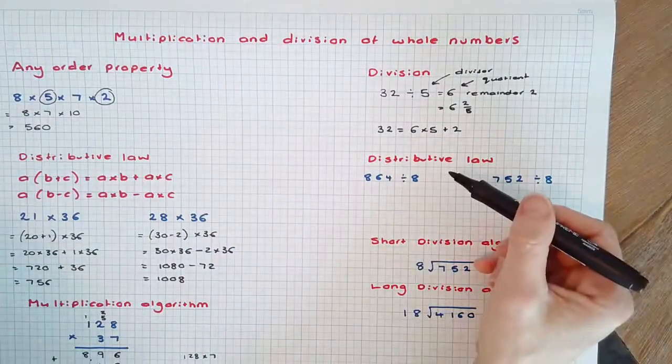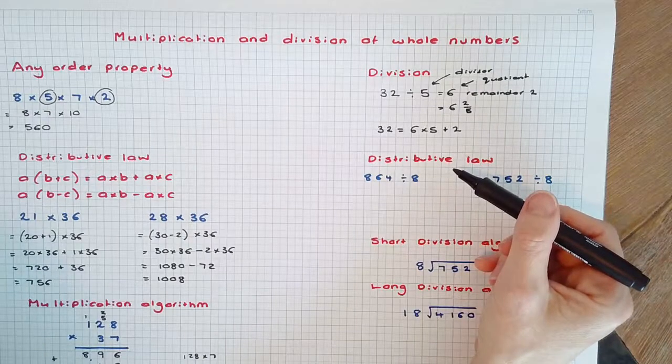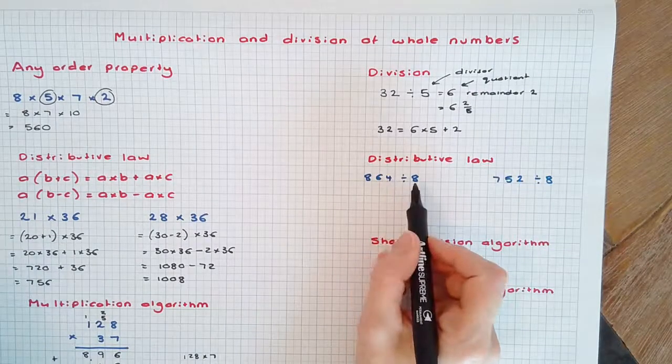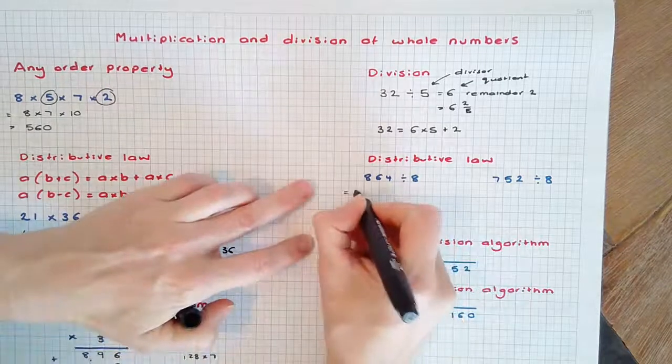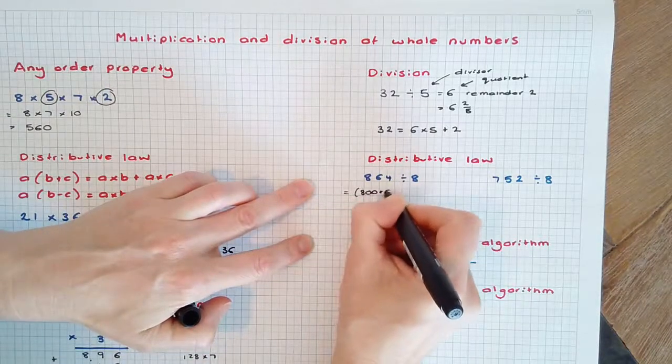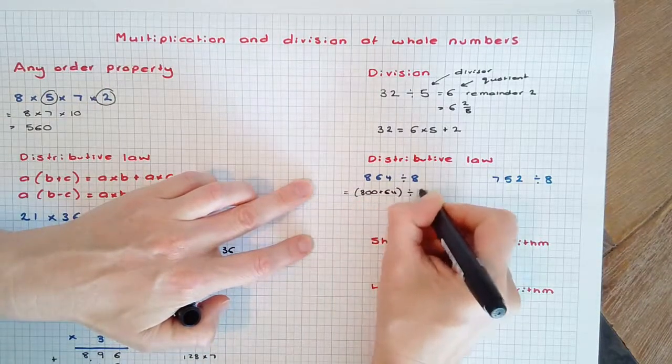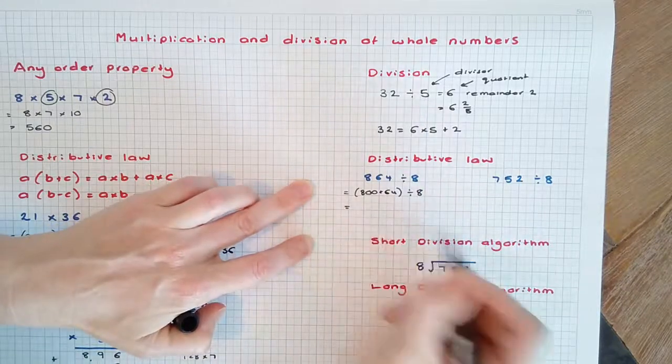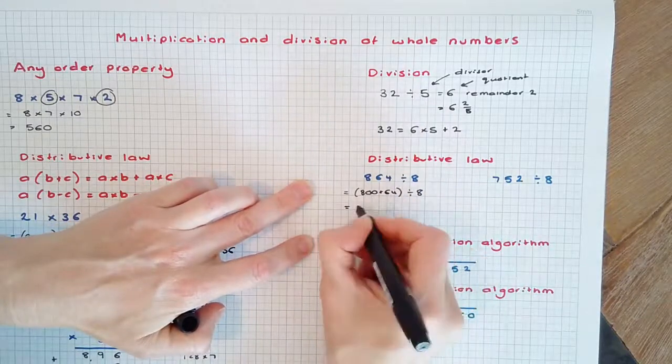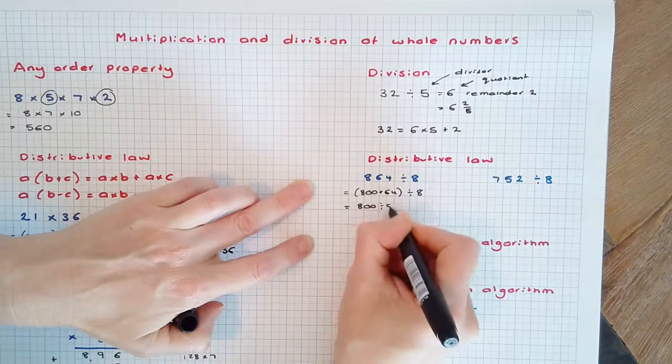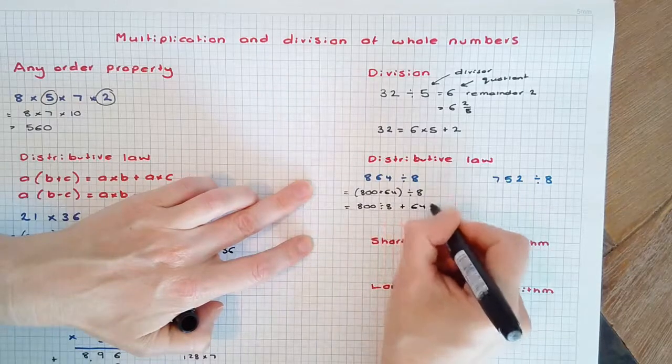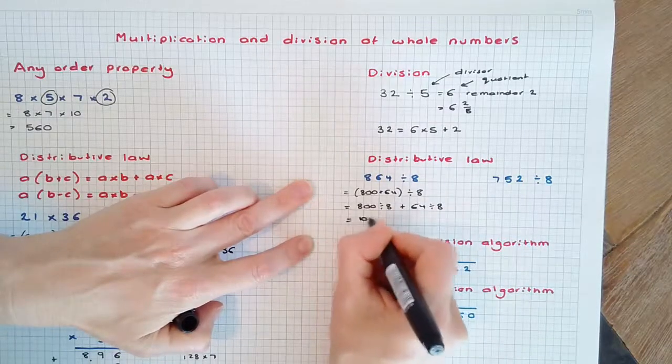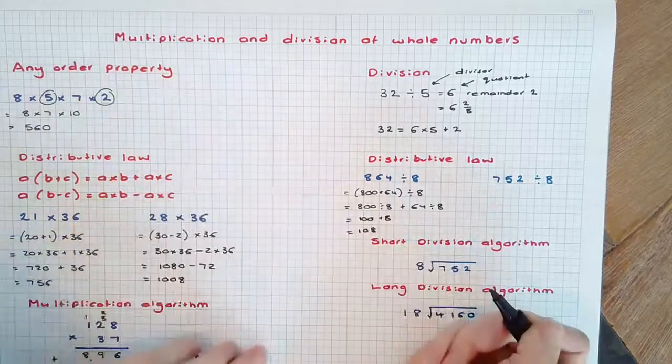Division is also distributive over addition and subtraction. 864 ÷ 8 can be rewritten as (800 + 64) ÷ 8. 800 ÷ 8 plus 64 ÷ 8 equals 100 + 8, which is 108.